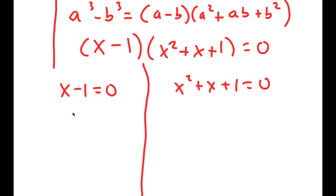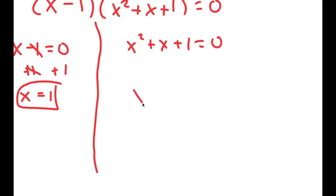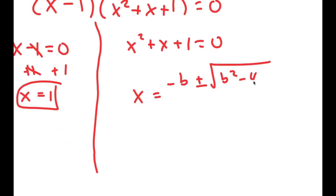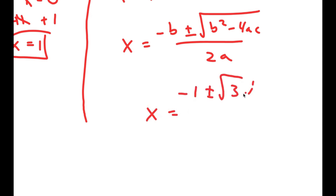So now I have x minus 1 equals 0 and x squared plus x plus 1 equals 0. For x minus 1 equals 0, all I have to do is add 1 on both sides and I get x is equal to 1. And for x squared plus x plus 1 equals 0, I can use the quadratic formula. By using it I get x is equal to negative 1 plus or minus the square root of 3i, over 2.